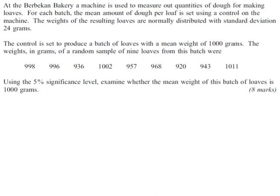I'm going to start off by summarizing the information in this. So the first important thing here is the standard deviation is 24 grams. That's the population standard deviation. The mean weight of loaves is 1000 grams. That's the population mean. I'm not going to put the units in. They're all in grams.